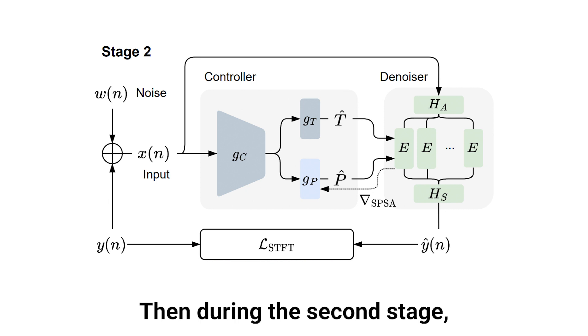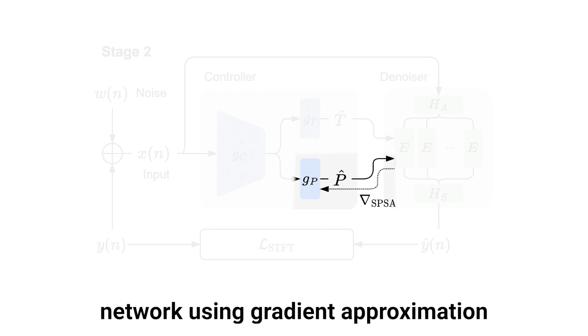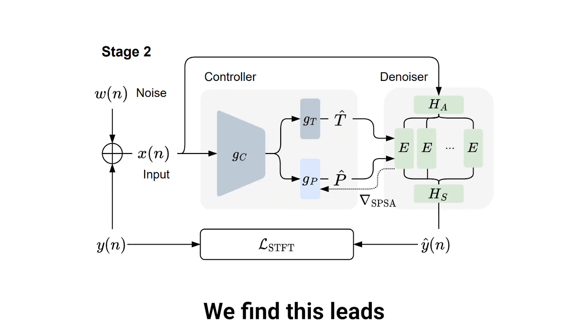Then, during the second stage, we freeze this network and train only the small parameter estimation network using gradient approximation with the denoiser in the loop. We find this leads to significantly faster convergence and improved performance.